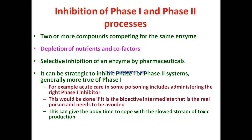Inhibition of phase one and phase two occurs when two or more compounds compete for the same enzyme, leaving less enzyme available for biotransformation. Inhibition is also caused by depletion of nutrients and cofactors due to insufficient nutrition or large amounts of xenobiotics. The ability to inhibit phase one or phase two is selectively used in pharmaceuticals — for example, acute care in some poisoning cases involves administering the right phase one inhibitor.